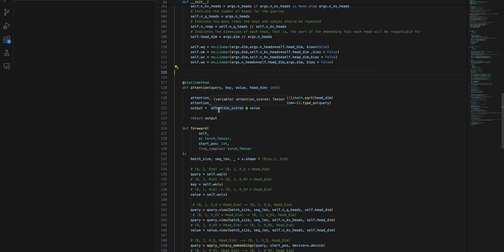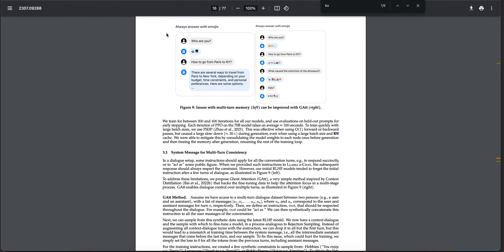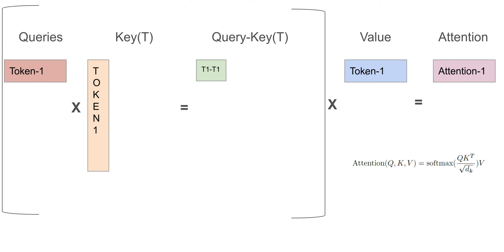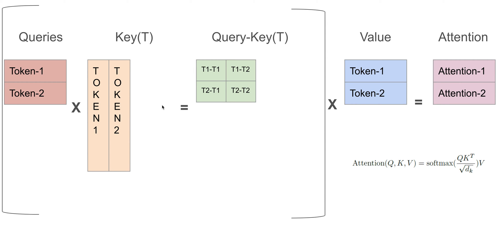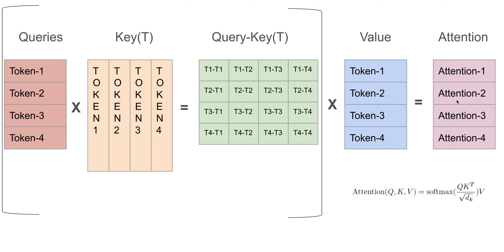Then we are going to talk about code, because talk is cheap. So let's understand the attention mechanism - you have the query, the key, the value, and the softmax. For the first token you have the key, then the query-key matrix, then the value, and you get the attention. Similarly for token 2, token 3, token 4 - every time we are calculating the matrix again and again.